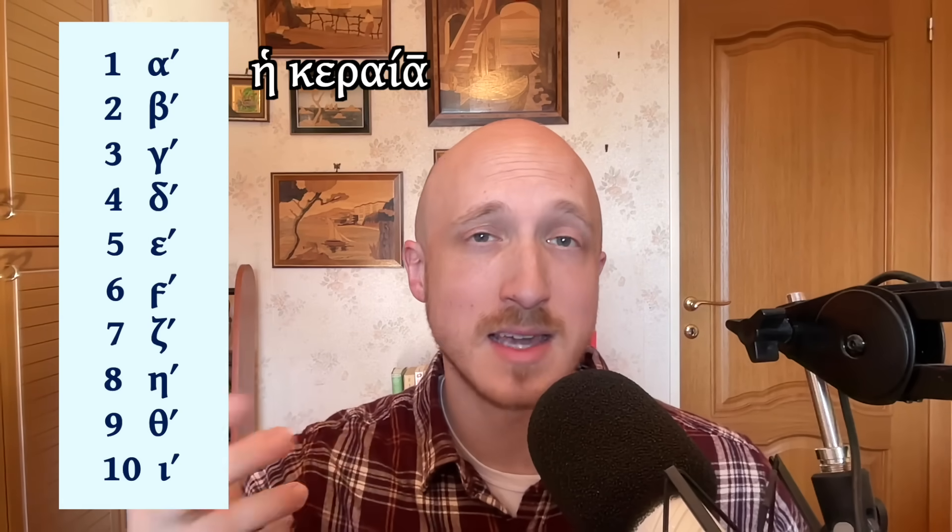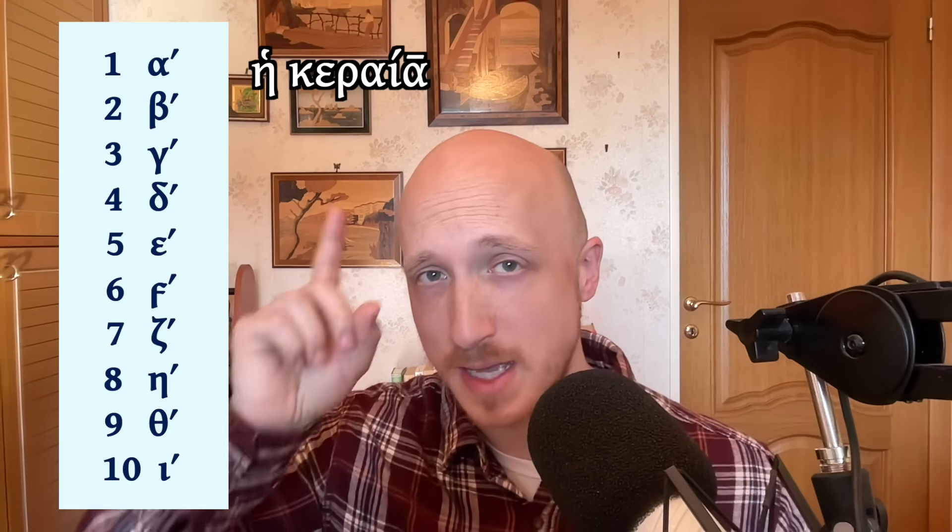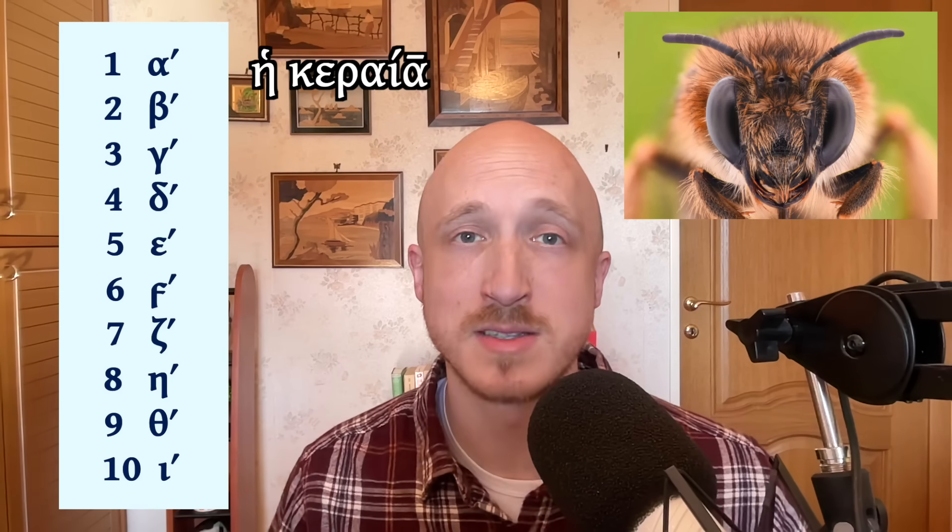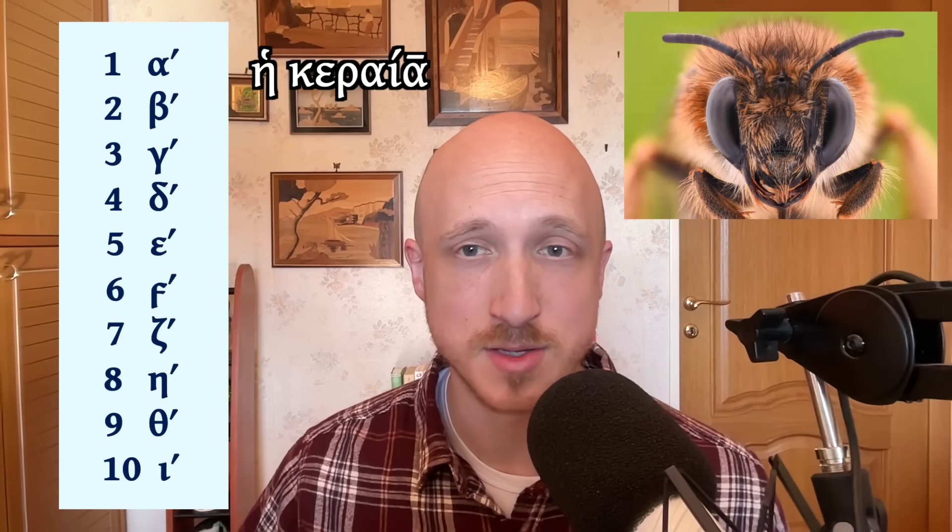Here's one to ten. One is the alpha, we usually put a little tick mark next to it. That little tick mark is called the keraia, which is the ancient Greek word for antennae. In modern Greek that's pronounced geria. So you have the alpha plus the little keraia. Number two is beta plus the keraia, three is gamma with the keraia, four delta with the keraia, five epsilon with the keraia.